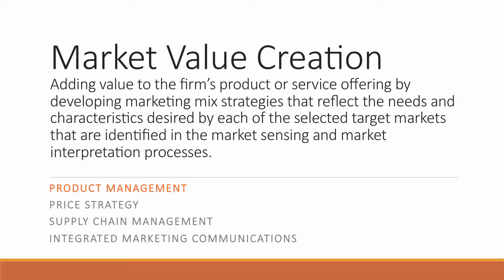When we talk about a marketing mix, we typically refer to product, price, place, and promotion — the four P's of marketing. We prefer to use the term supply chain management instead of distribution or place, because it's much more encompassing with getting the product to the consumer. And we use the term integrated marketing communications instead of promotion. So the four P's become product management, price strategy, supply chain management, and integrated marketing communications.